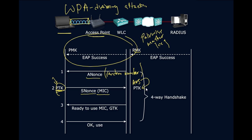We're not using a shared key that everybody keeps forever. We're using a Group Transient Key, meaning if anybody leaves the group, the GTK can change. The authenticator sends the Group Transient Key across with a MIC — a Message Integrity Check — so everyone can verify they are receiving the right information. The client receives this, and now has both a Pairwise Transient Key and a Group Transient Key, enabling encrypted unicast and broadcast traffic.